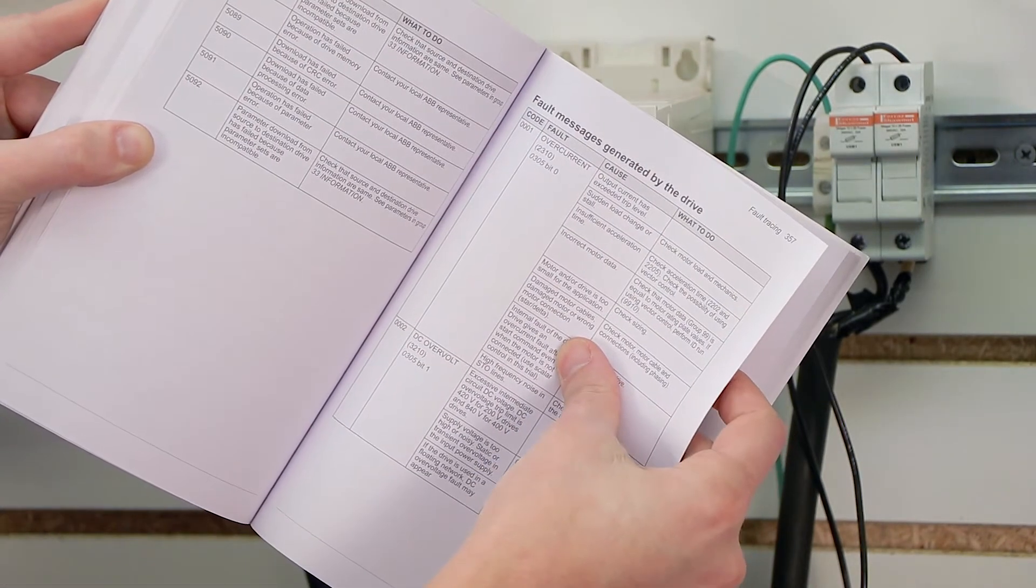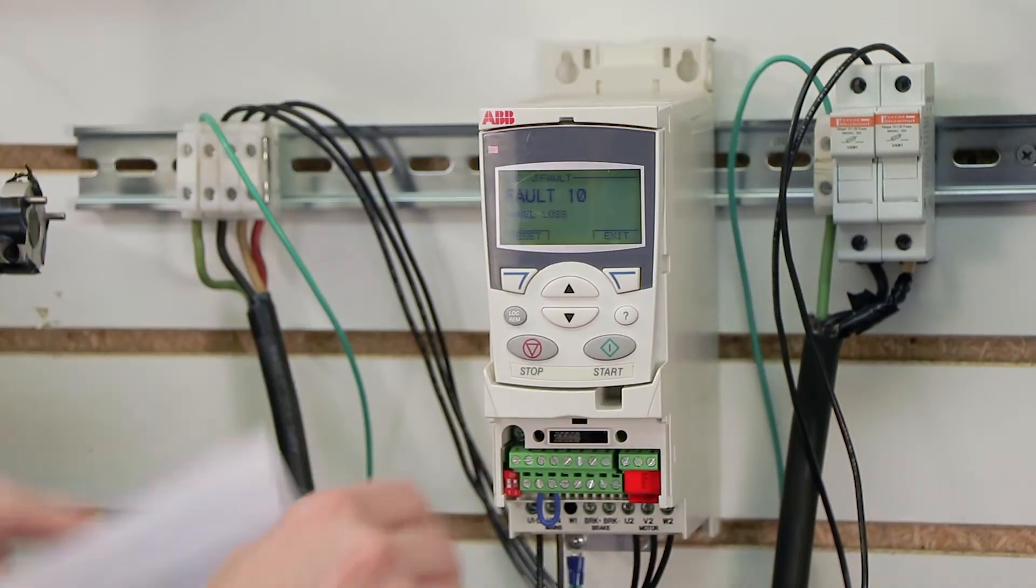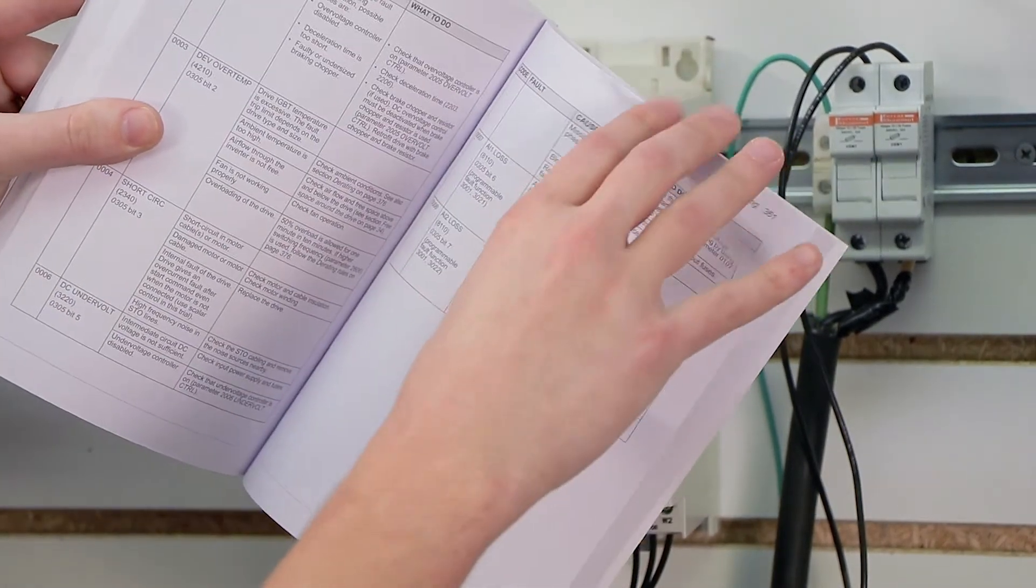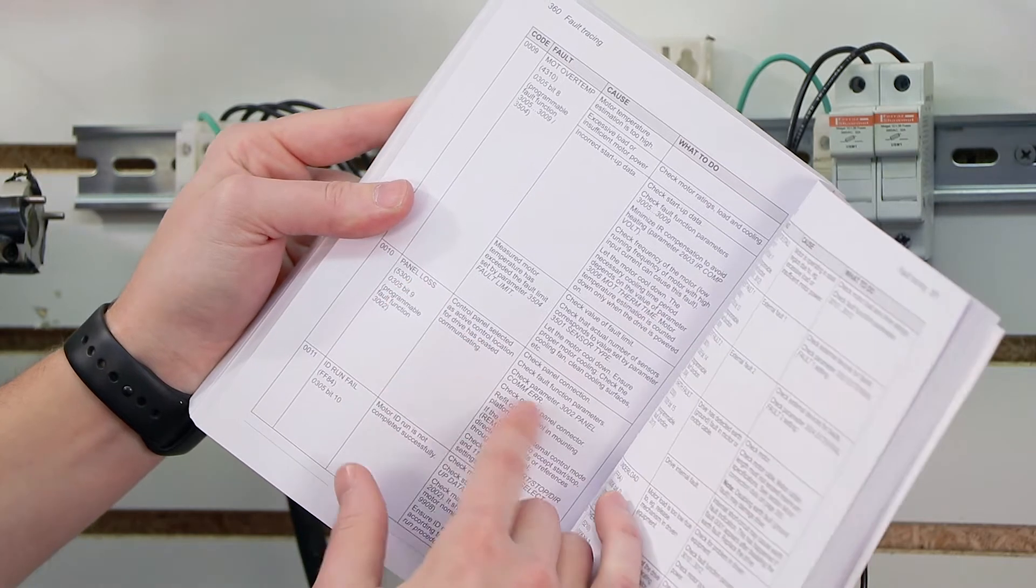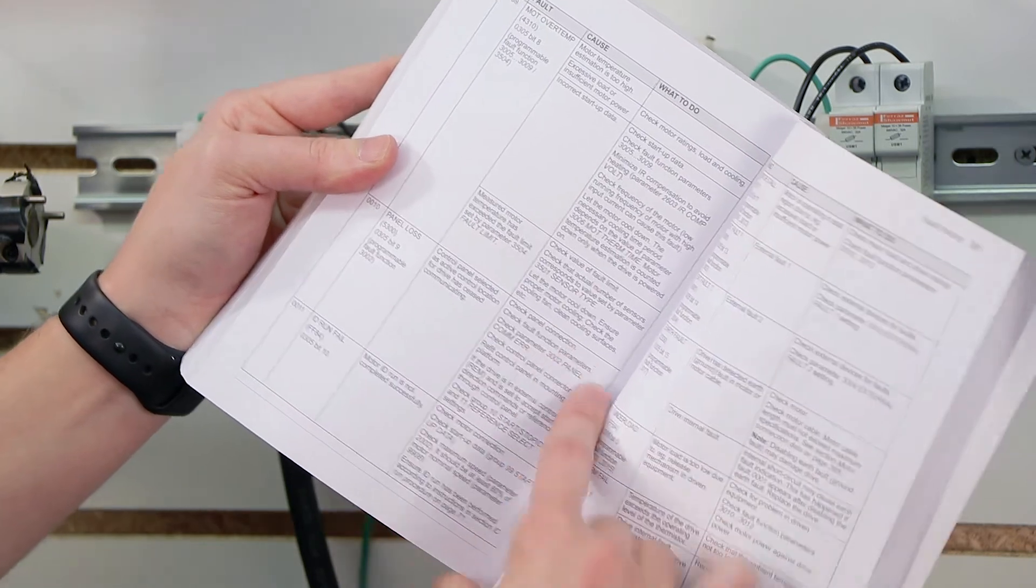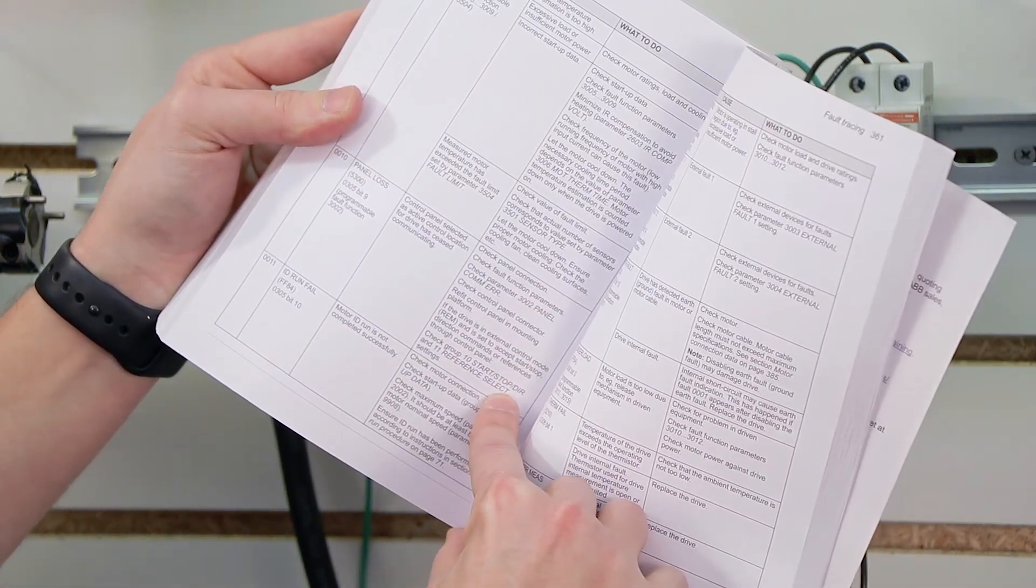We're going to go to the actual codes, which we had discussed. So this is code one, code two. We actually are on code 10. So I'm going to flip a couple pages all the way to code 10, panel loss. Once again, control panel selected as active control location has ceased communicating. Now it's giving me a ton of options of what I can do to possibly resolve this issue.